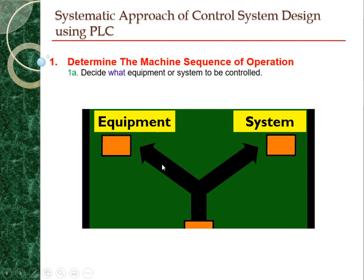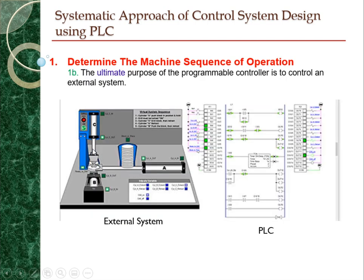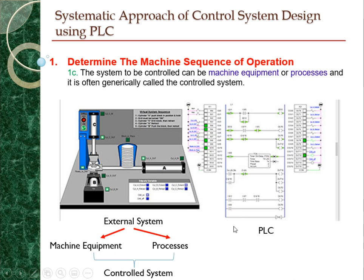The first sub-step is to decide whether we are designing the PLC program to control an equipment or a system. Secondly, we need to know the purpose of the PLC controller, which is to control an external system. In this example, the PLC is used to control an external system in a factory — for example, to control a pneumatic system, a machine, and to receive input from buttons. The system that can be controlled can be either a machine, equipment, or processor, and is often called the control system.